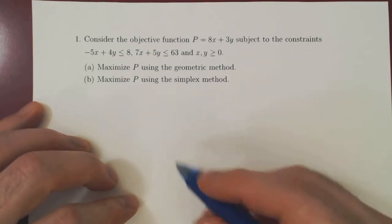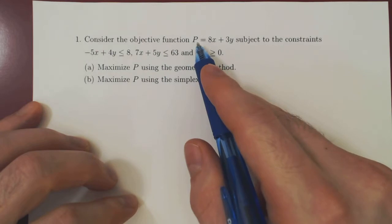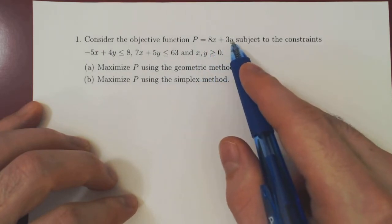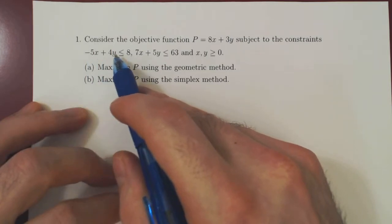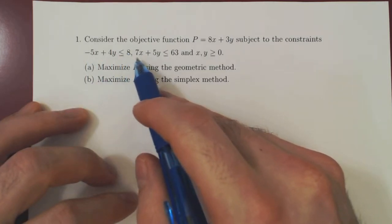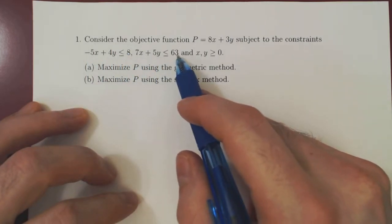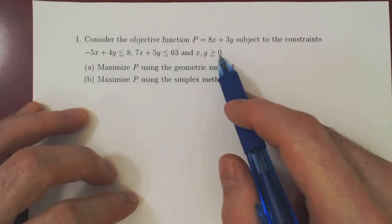Okay, so here's the problem. Consider the objective function P equals 8x plus 3y subject to the constraints: negative 5x plus 4y is at most 8, 7x plus 5y is at most 63, and both x and y are non-negative.